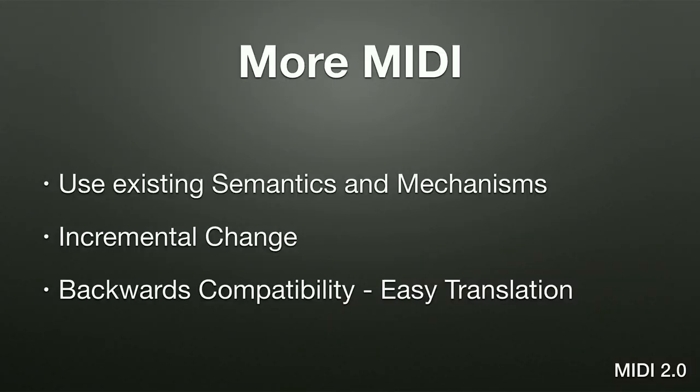Protocol negotiation: using MIDI CI, two devices with a bi-directional connection ask 'how about we use the new MIDI 2.0 protocol?' If both agree, they switch — followed by a test. If that test fails, both devices revert back to MIDI 1.0, always protecting the integrity of MIDI 1.0. MIDI 2.0 protocol uses the existing semantics and mechanisms of MIDI 1.0 — note on, note off with velocity, controllers, program change — and backwards compatibility was kept high priority.